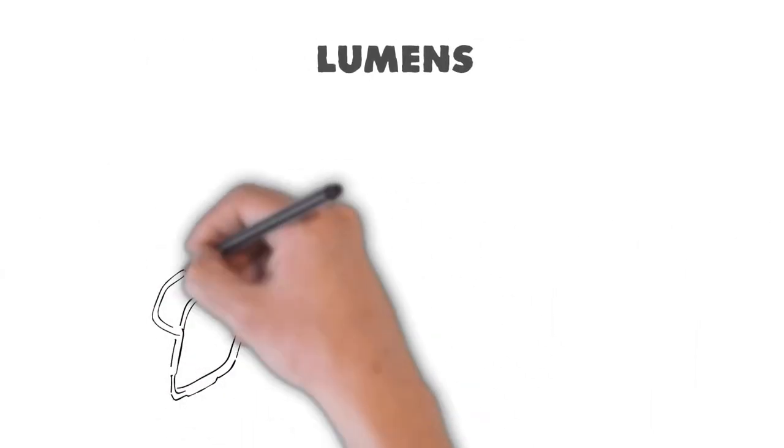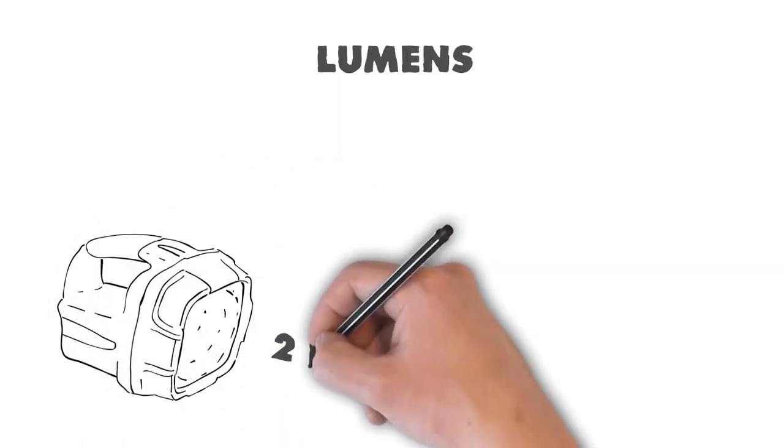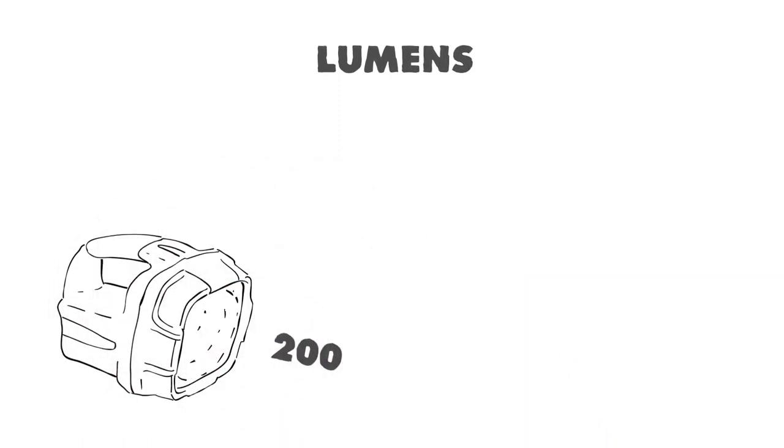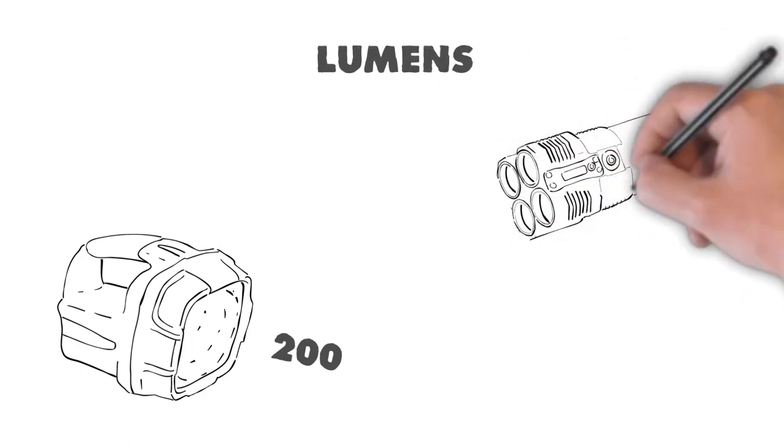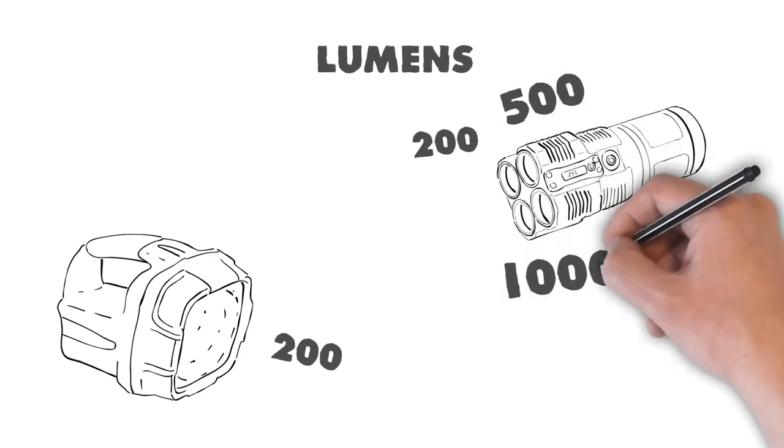To give you an idea, the dolphin torch that was amazing when I was a kid, and you can still get them, can put out up to 200 lumens. Whereas most of our torches are able to dim down to that level, but many are exceeding 1,000 lumens, and much, much more.